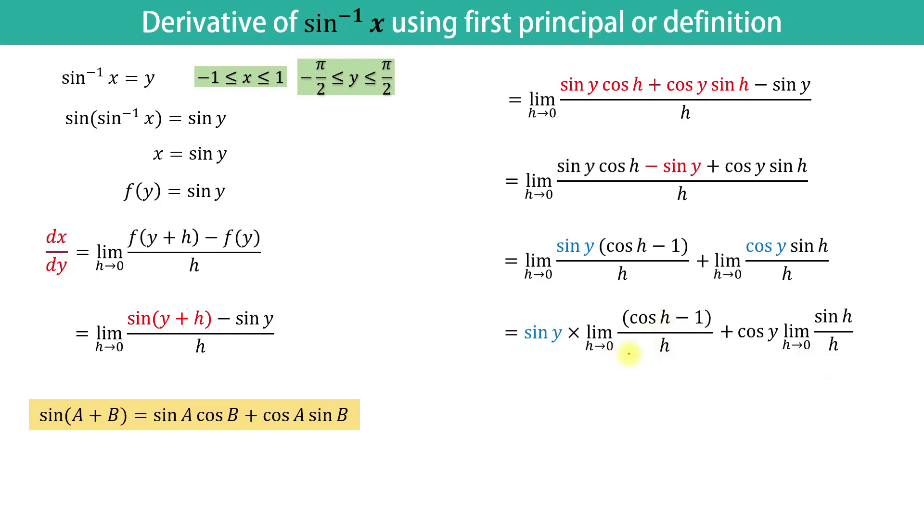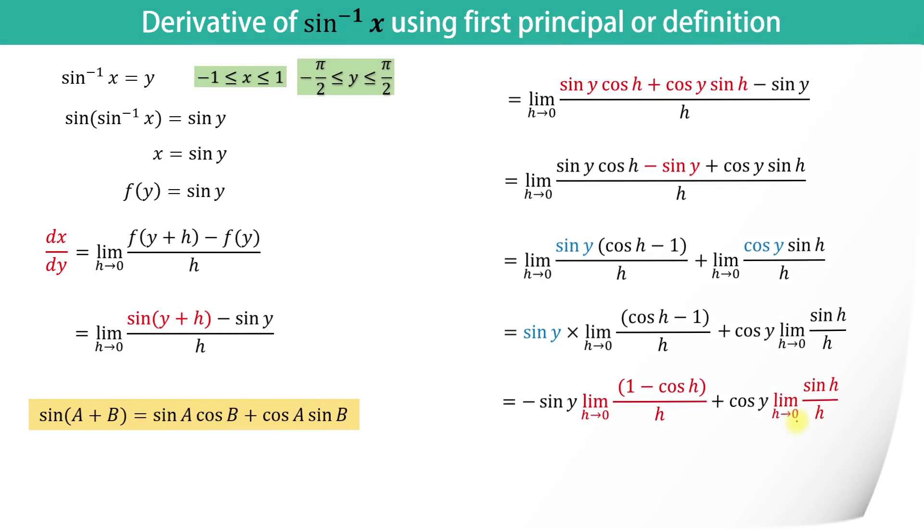Now, we will take negative 1 common from this expression and we will get negative sin y times limit when h tends to 0 of 1 minus cos h upon h plus cos y times limit of sin h upon h when h tends to 0.